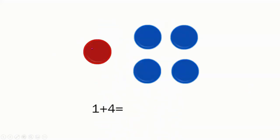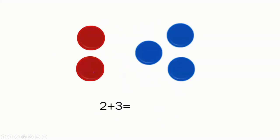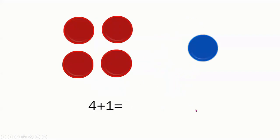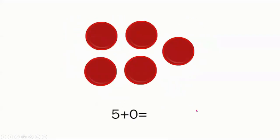Here we have one and four make five. Two and three make five. Three and two make five. Four and one make five. And then five and zero make five.